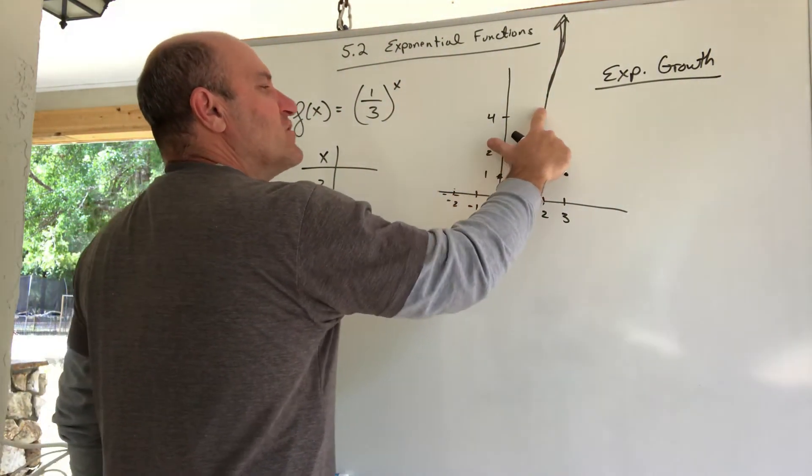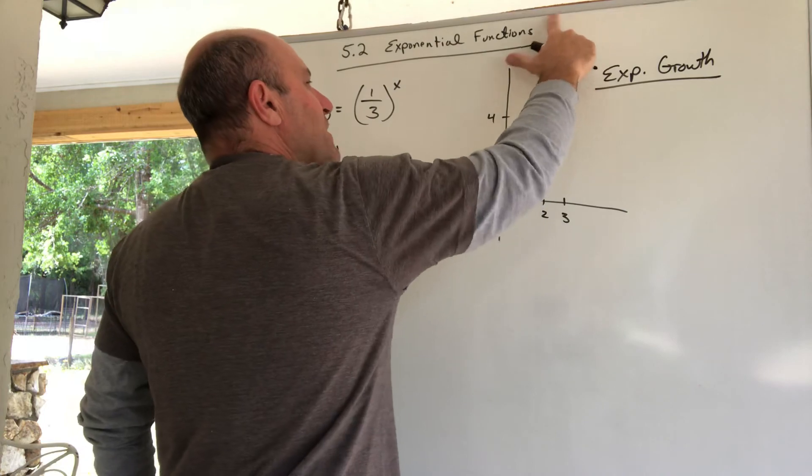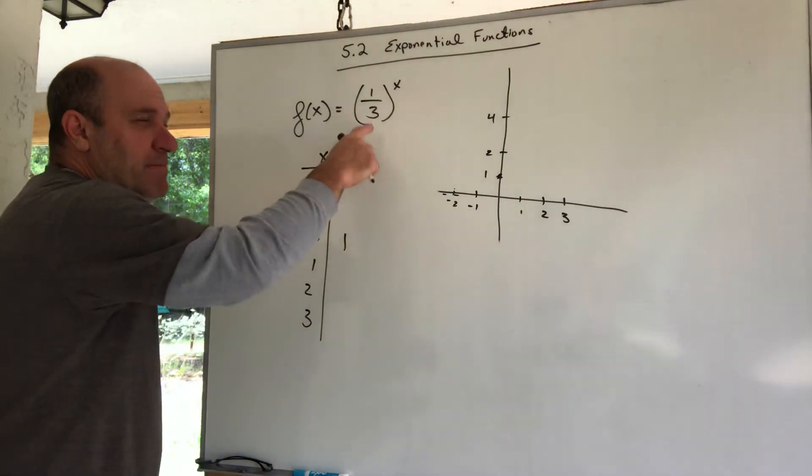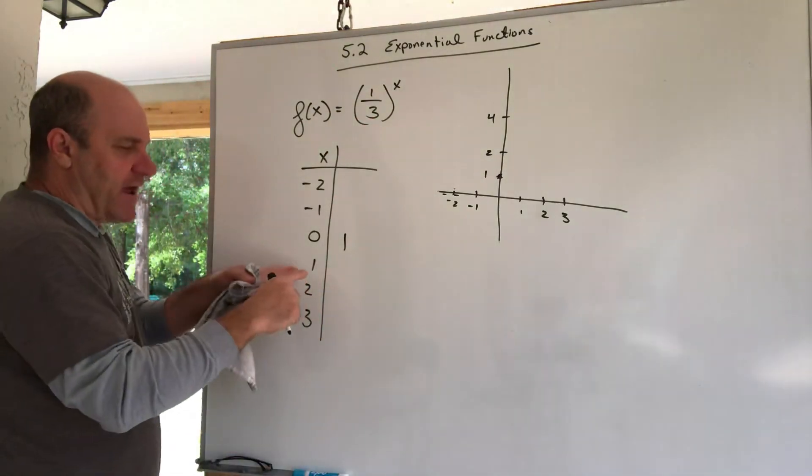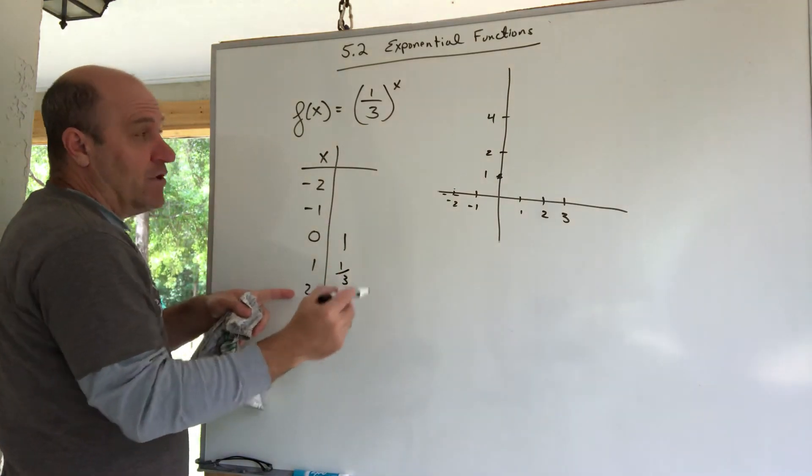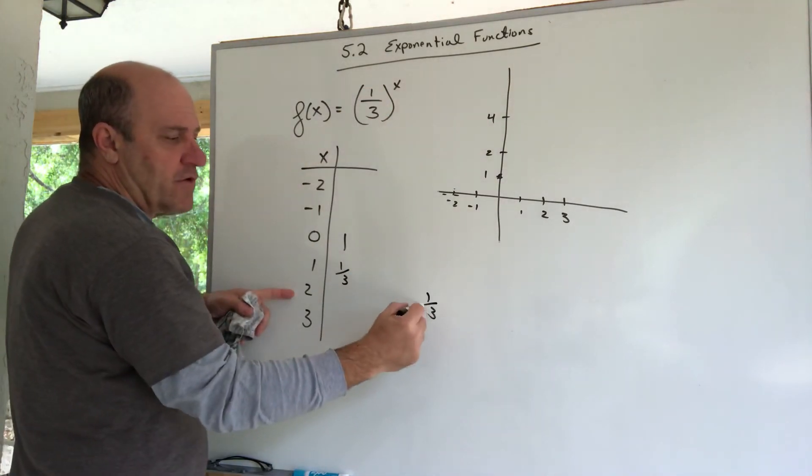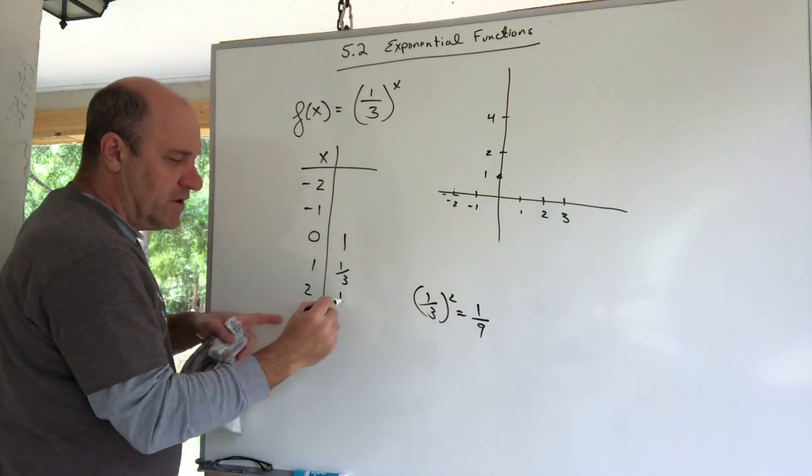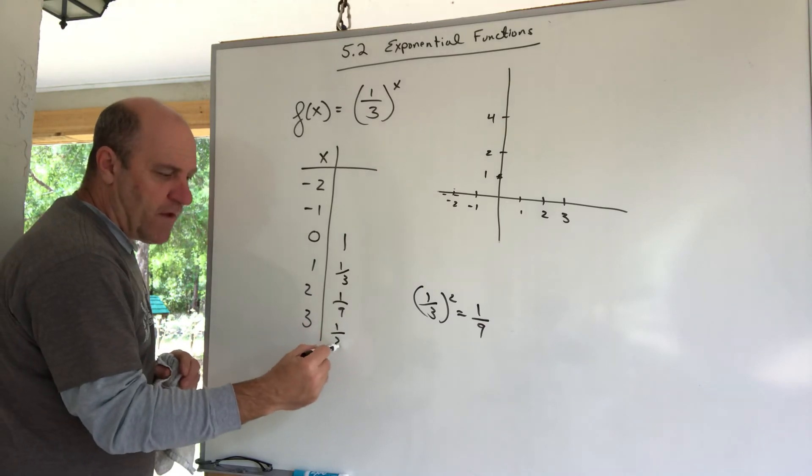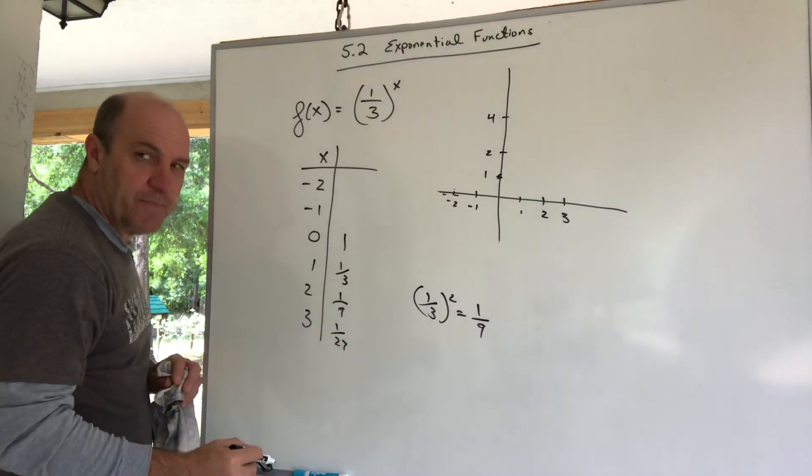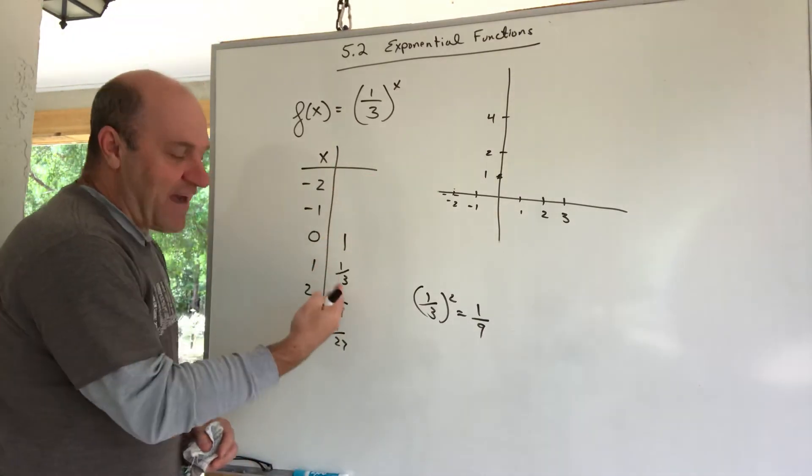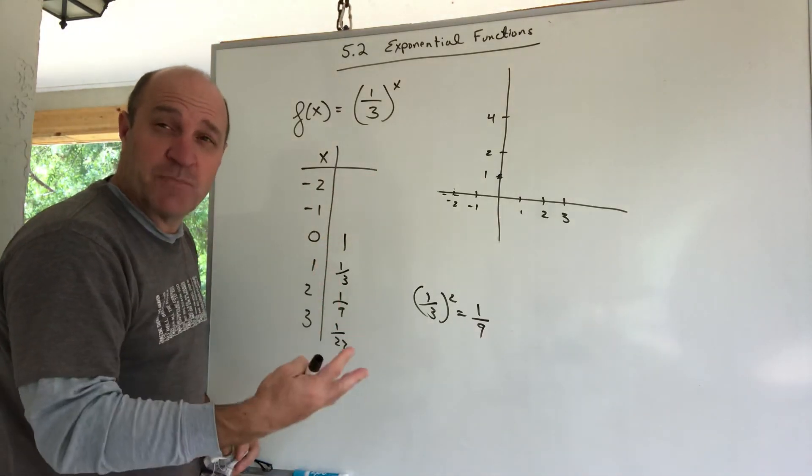My base this time is a one third. Since my base is a one third, I keep multiplying by one third. Plug in a one, you get one third to the first, that's one third. When you plug in a two, you get one third squared, that is one ninth. So I'm multiplying by a one third. If I multiply by another one third, I got one twenty seventh. When you multiply by a number less than one, you don't have growth. These y values are decreasing. We have exponential decay.